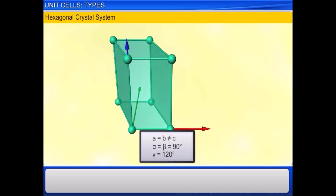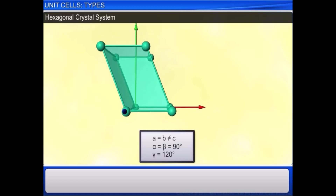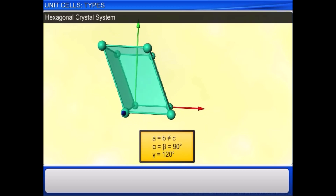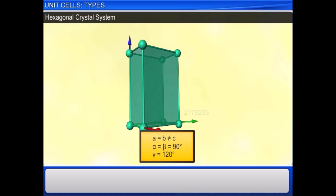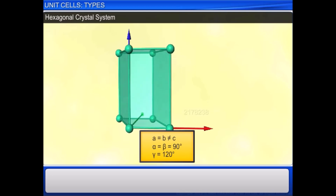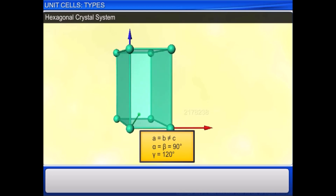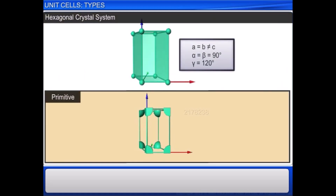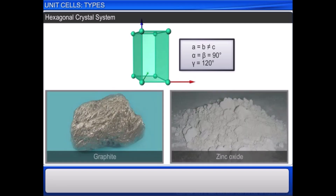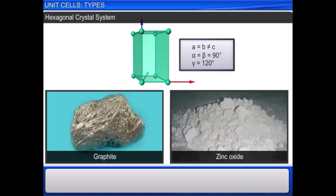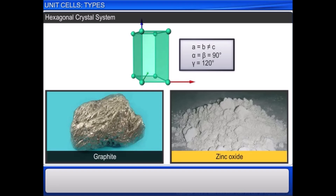In a hexagonal crystal system, two edges are of equal length, two angles are of 90 degrees, and one angle is of 120 degrees. The only possible lattice is primitive. Examples include graphite and zinc oxide.